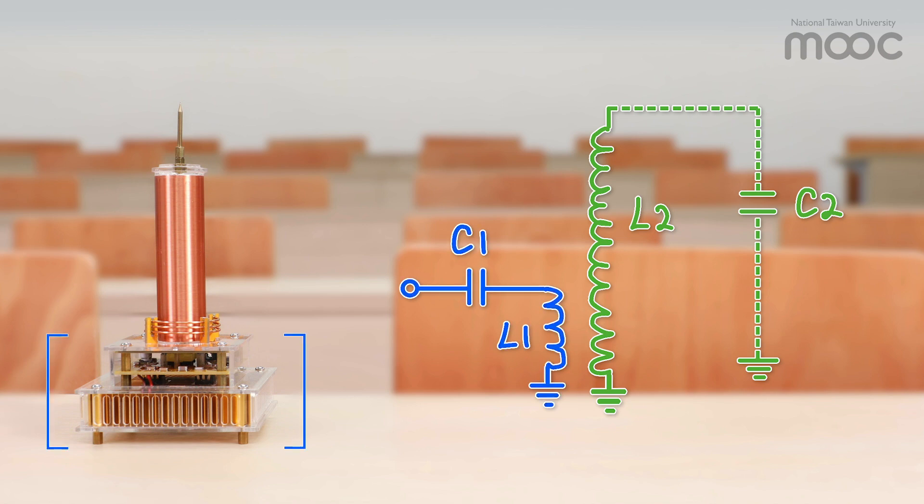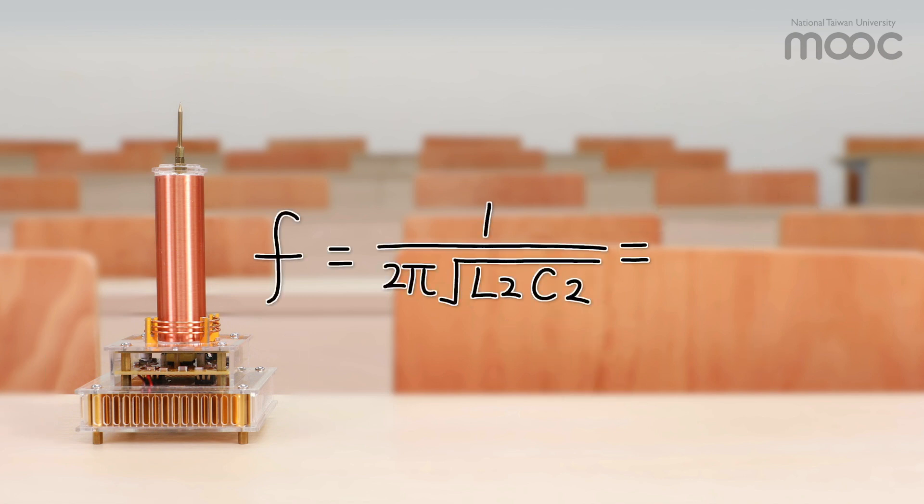If the primary inductance L1 and its respective capacitance C1 are chosen carefully to create an identical resonant frequency as the secondary, very high voltage oscillations can be generated at the secondary coil.